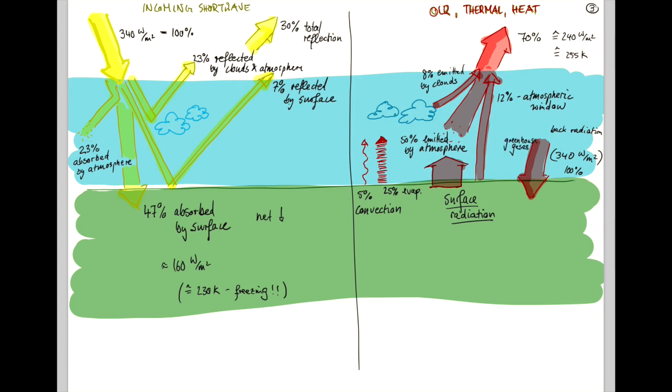So 100%. And this back radiation is due to greenhouse gases. We realize that net down, what comes in, is 47%. And so net up, to be balanced, needs to also be 47%.